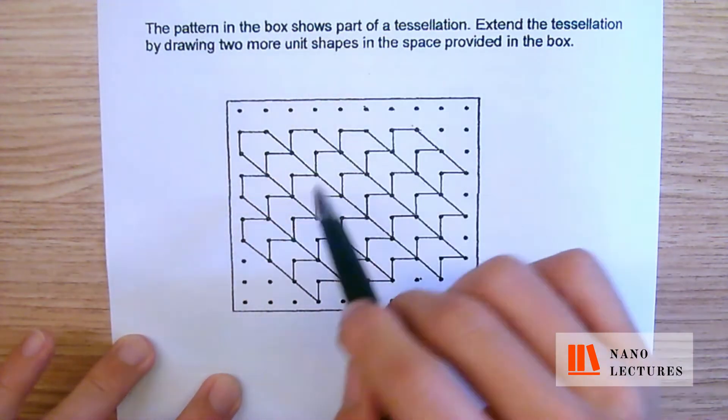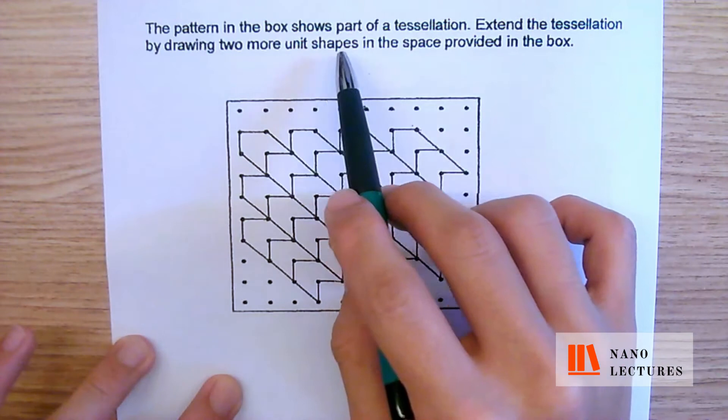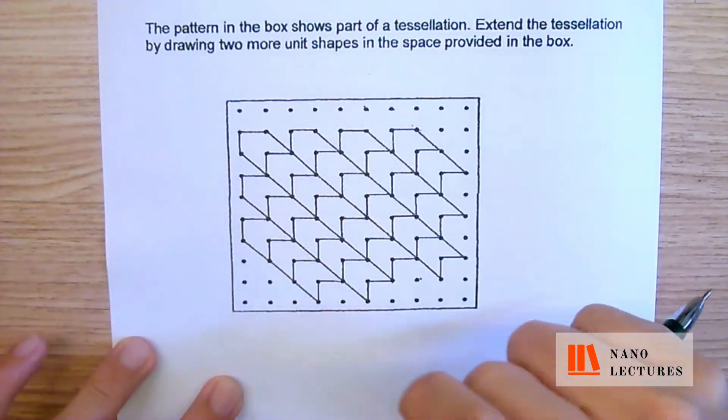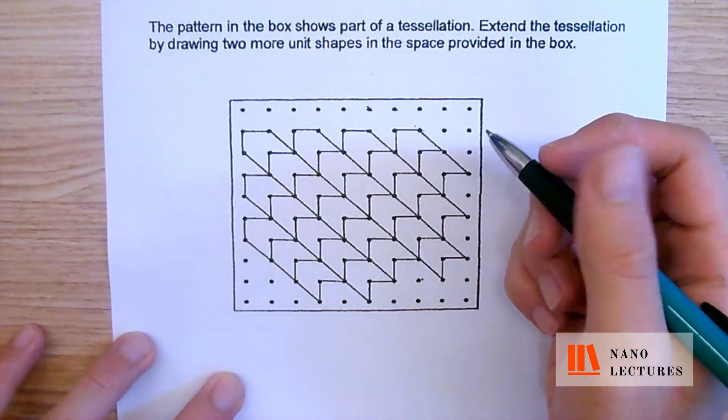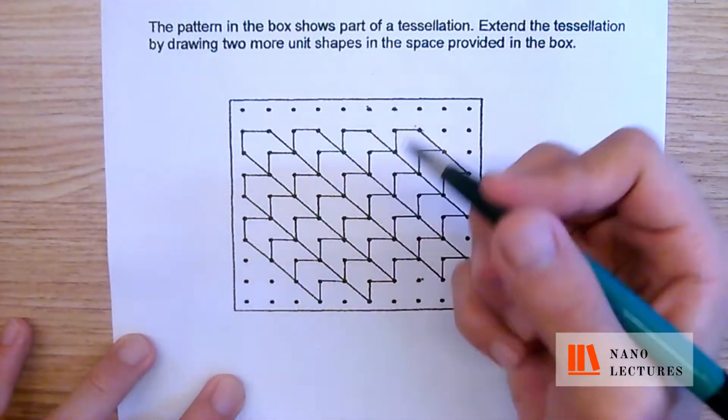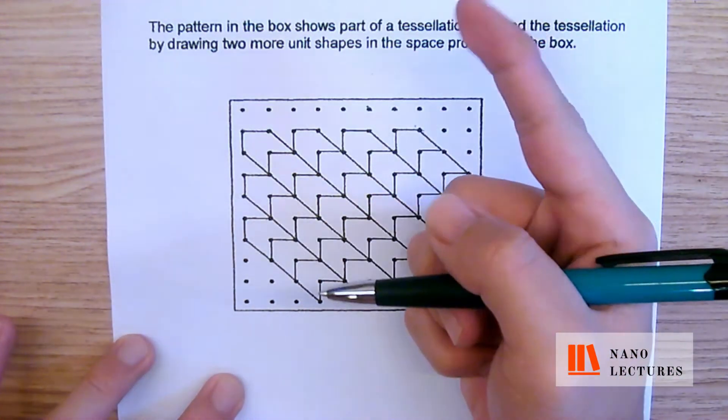The pattern in the box shows part of the tessellation. Extend the tessellation by drawing two more unit shapes in the space provided in the box. Now as per my strategy previously, just going to watch my previous videos, we will always start by shading one unit first.